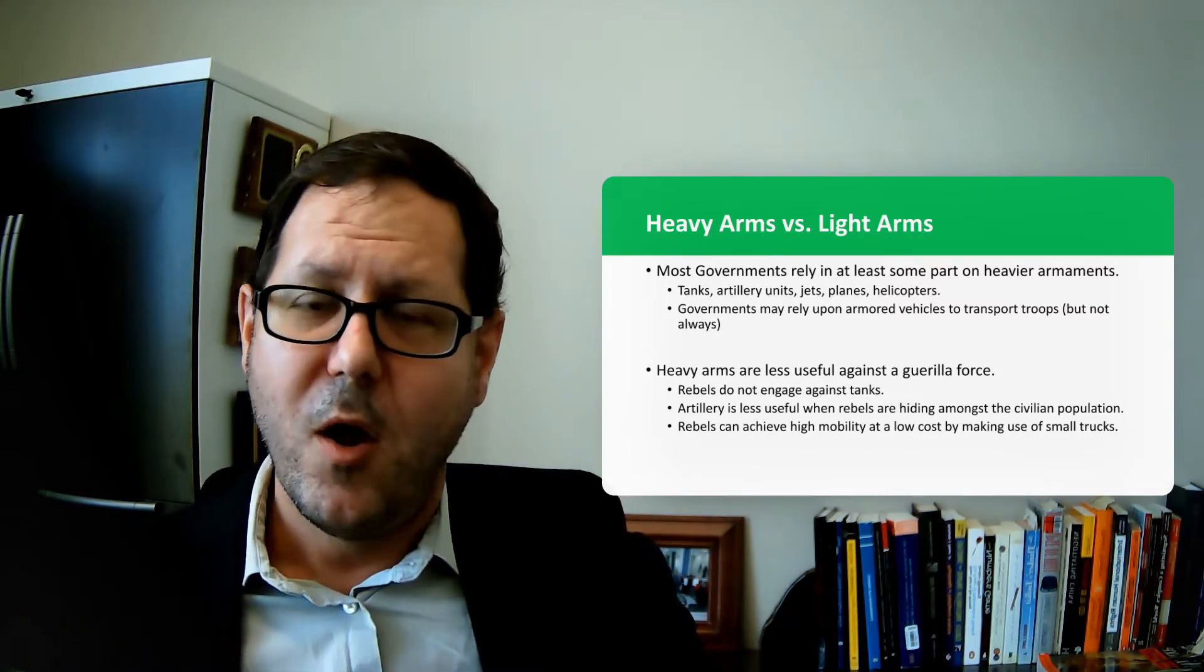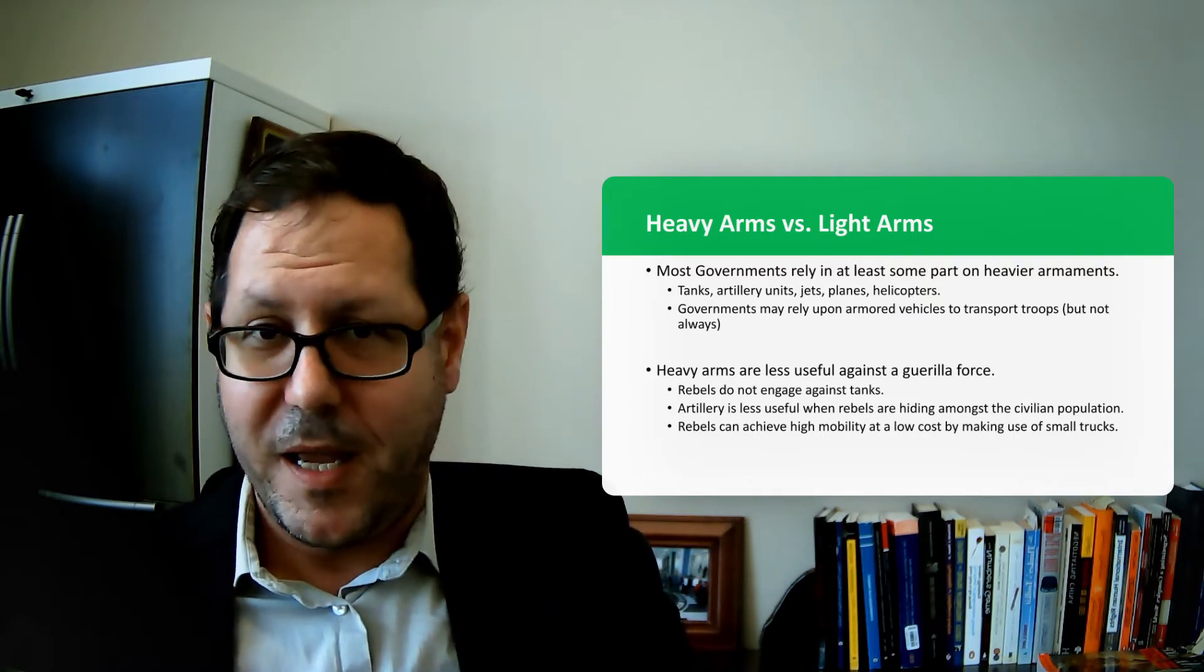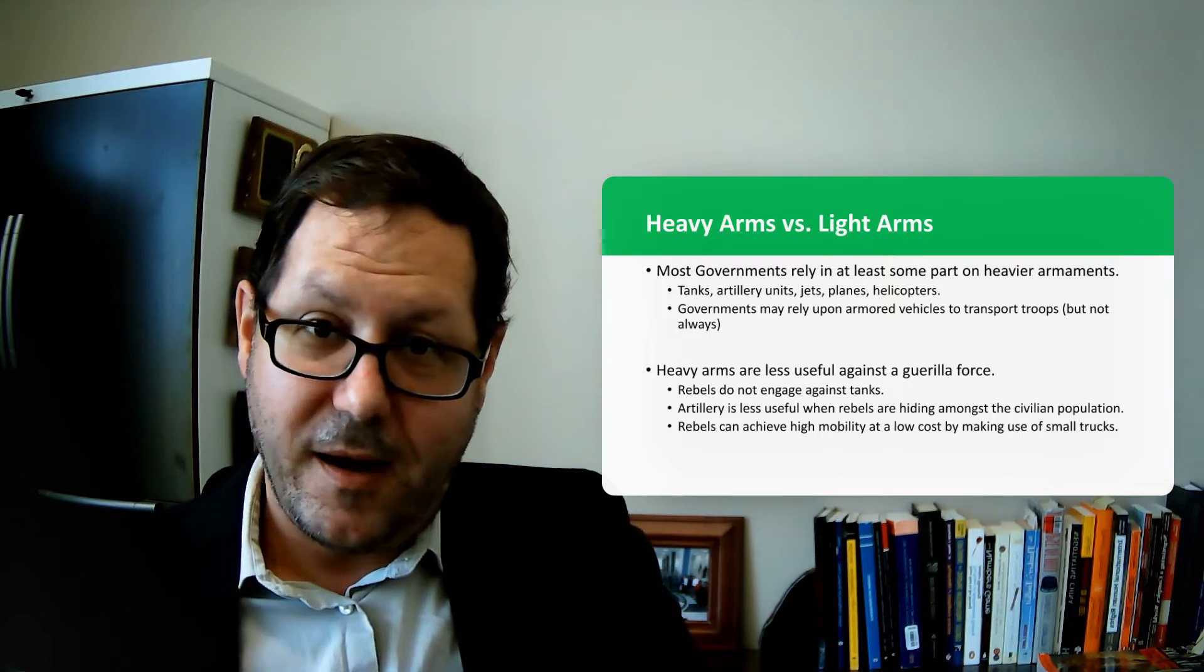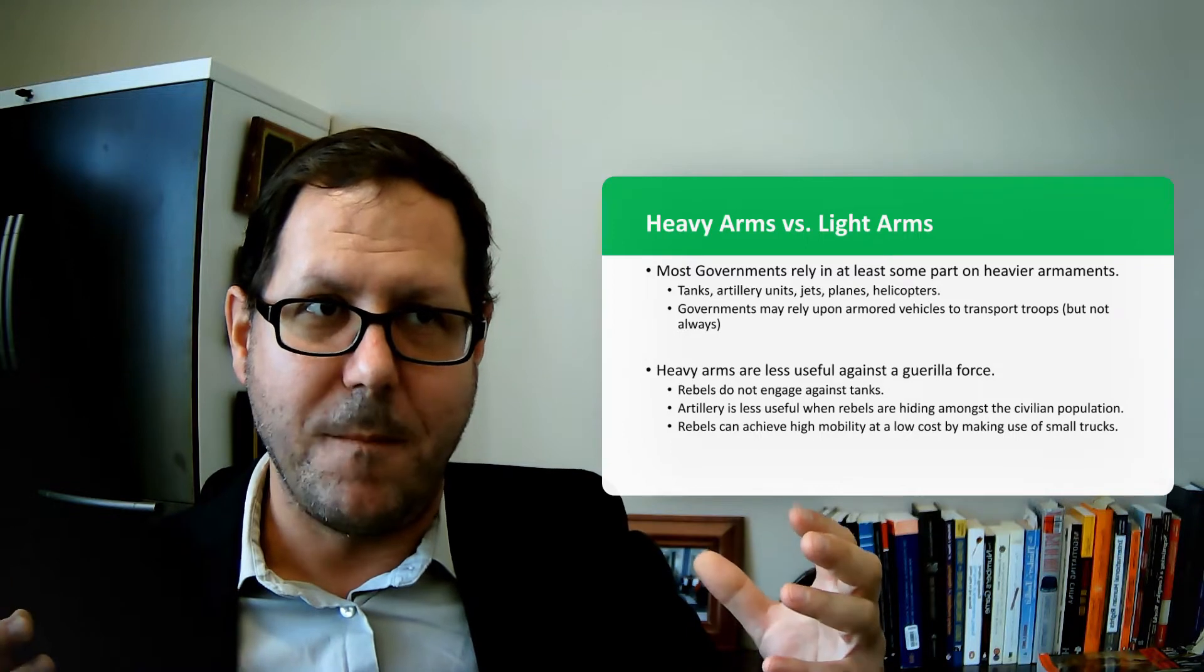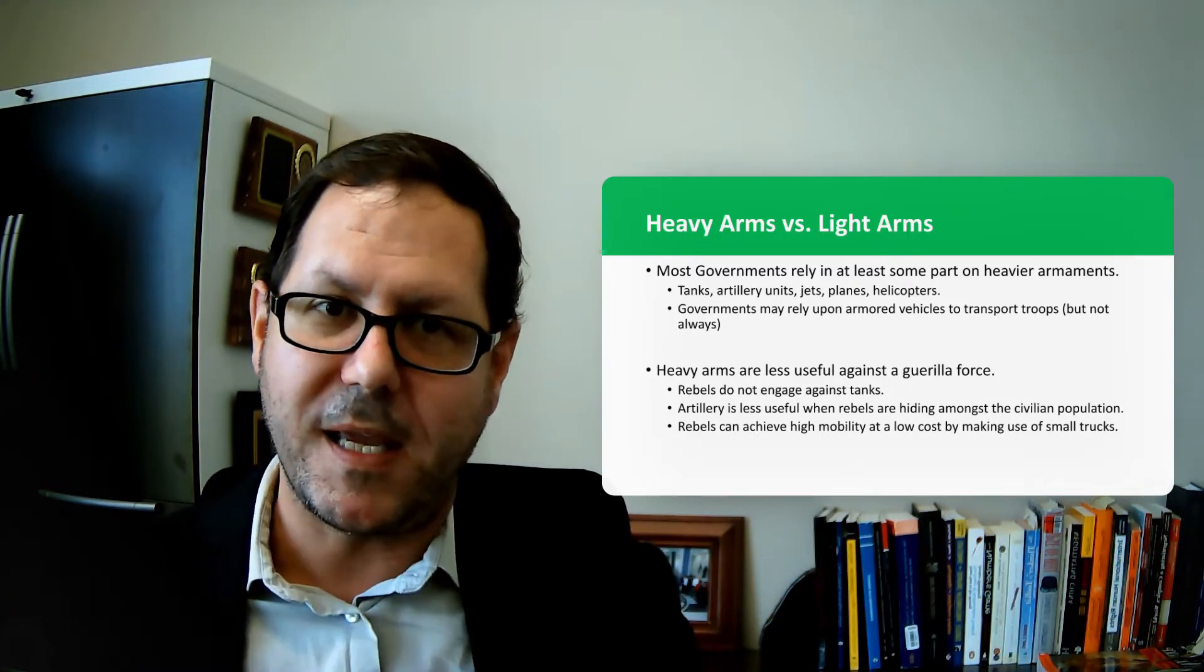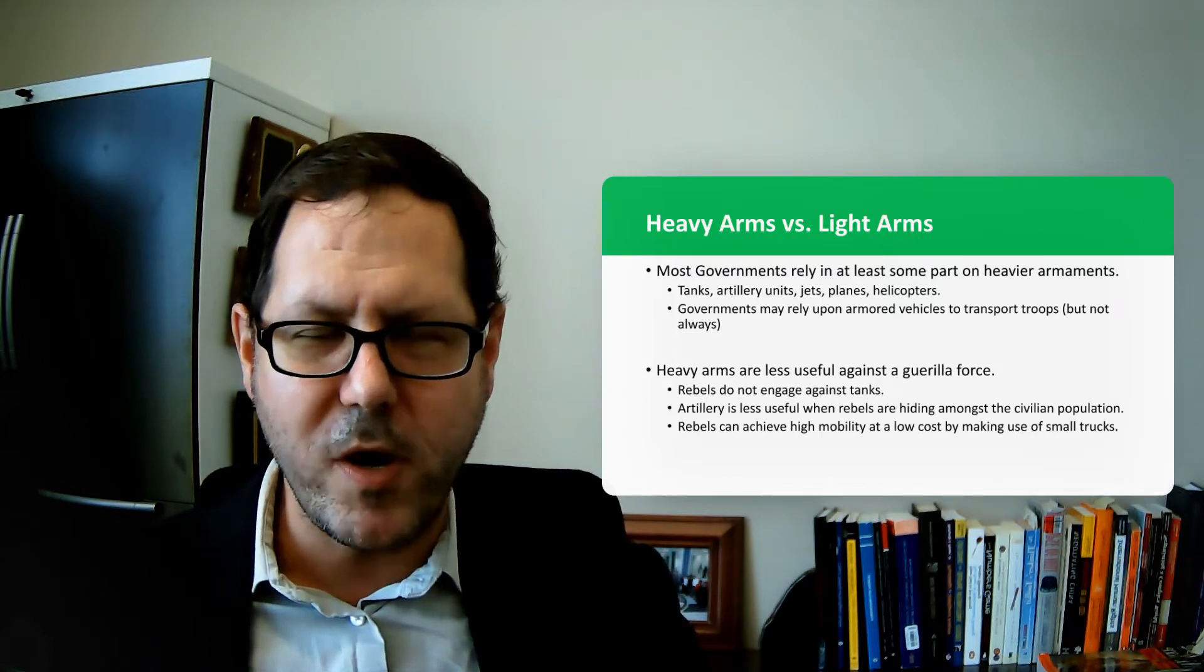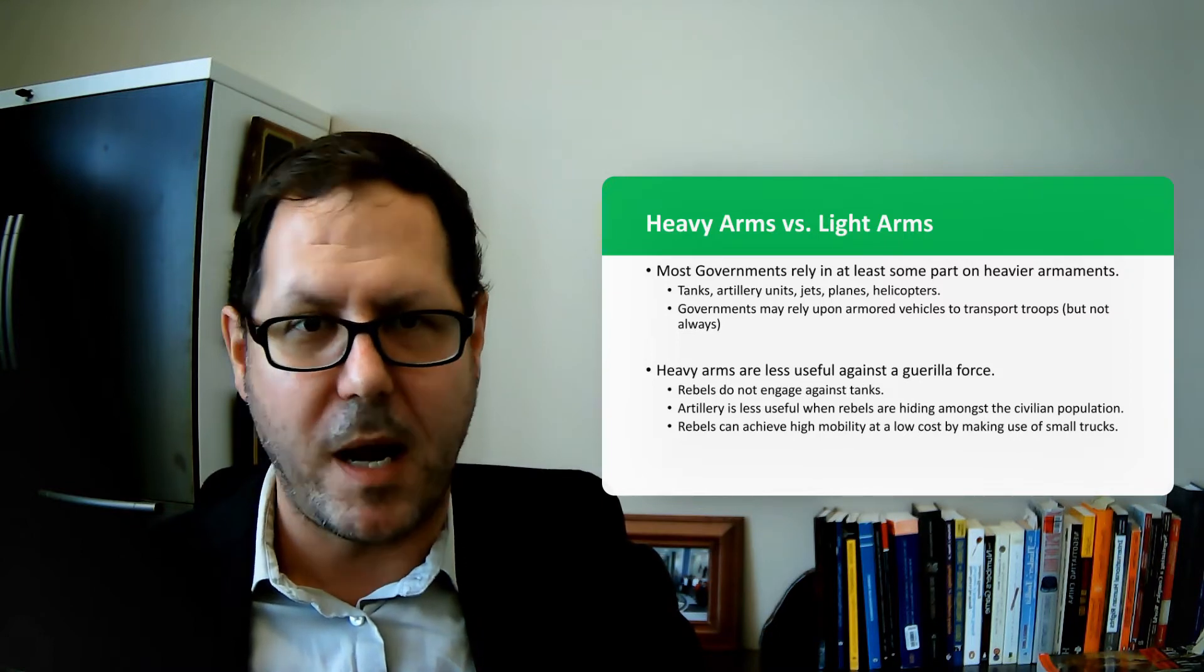Beyond that, we have the heavier support of armored personnel carriers and tanks, artillery pieces, air support, whether it's helicopters or fighter jets. There's this massive capital investment that states make around their soldiers who might be carrying small and light arms. Those heavy arms are pretty exclusive to states; they're rarely fielded by rebel groups.